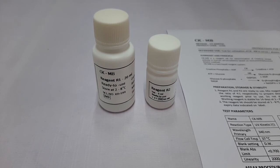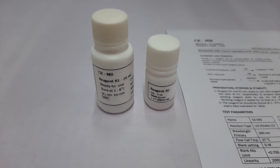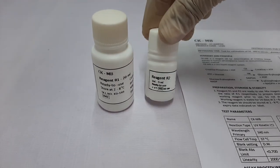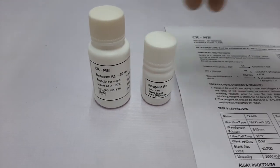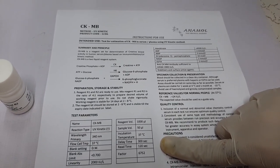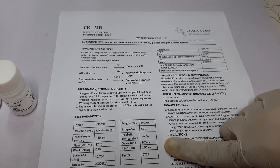First, let's have a look at the kit components. The kit contains one bottle of CKMB-R1 reagent, one bottle of CKMB-R2 reagent, and the instructions for use. We recommend all users to read the instructions for use thoroughly before using the test.